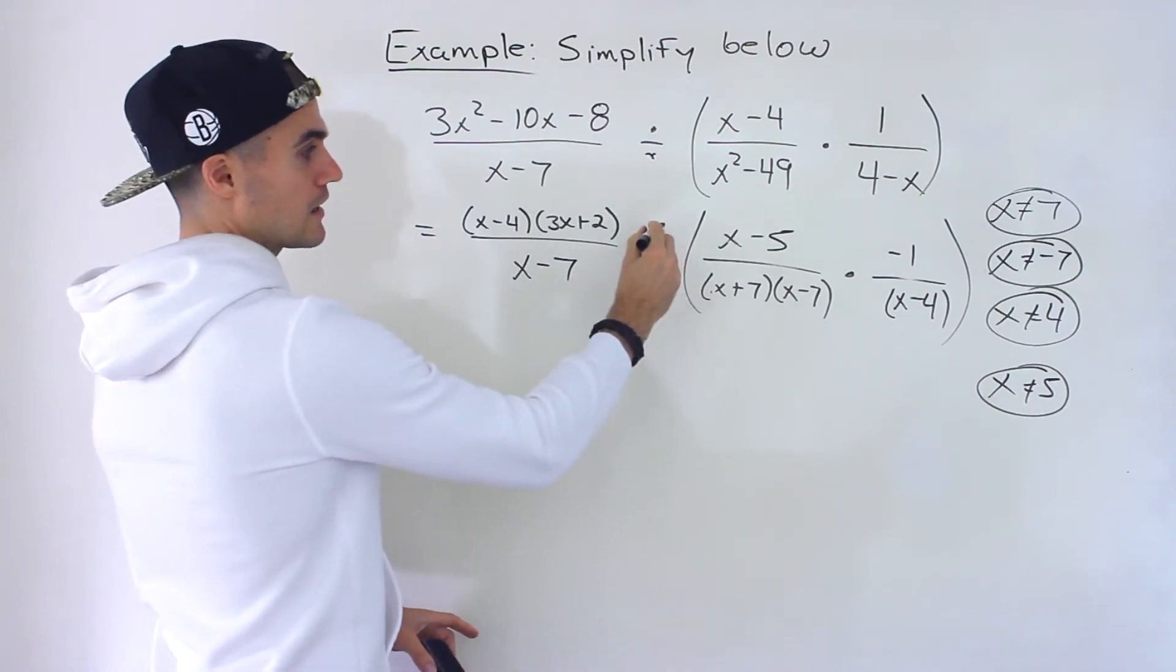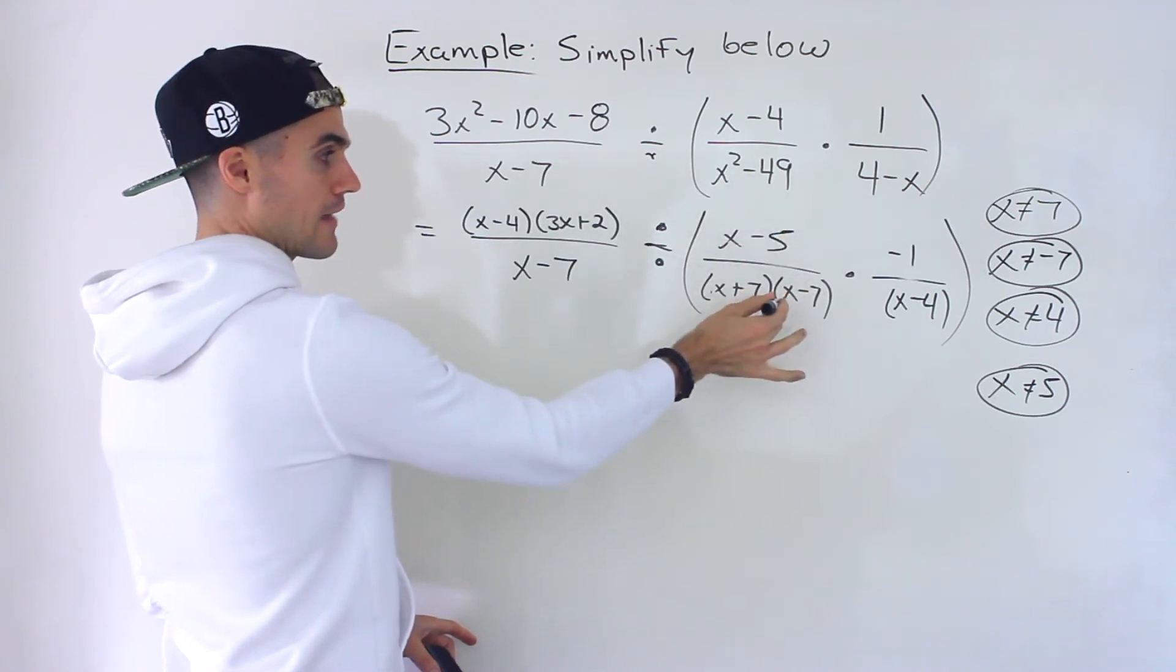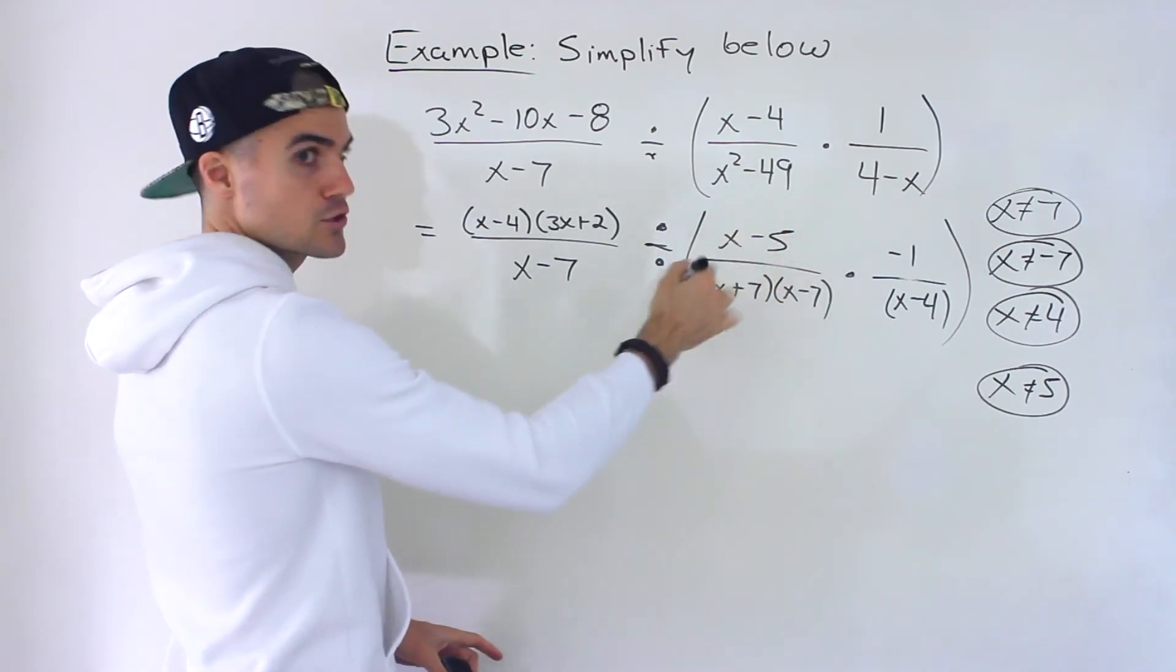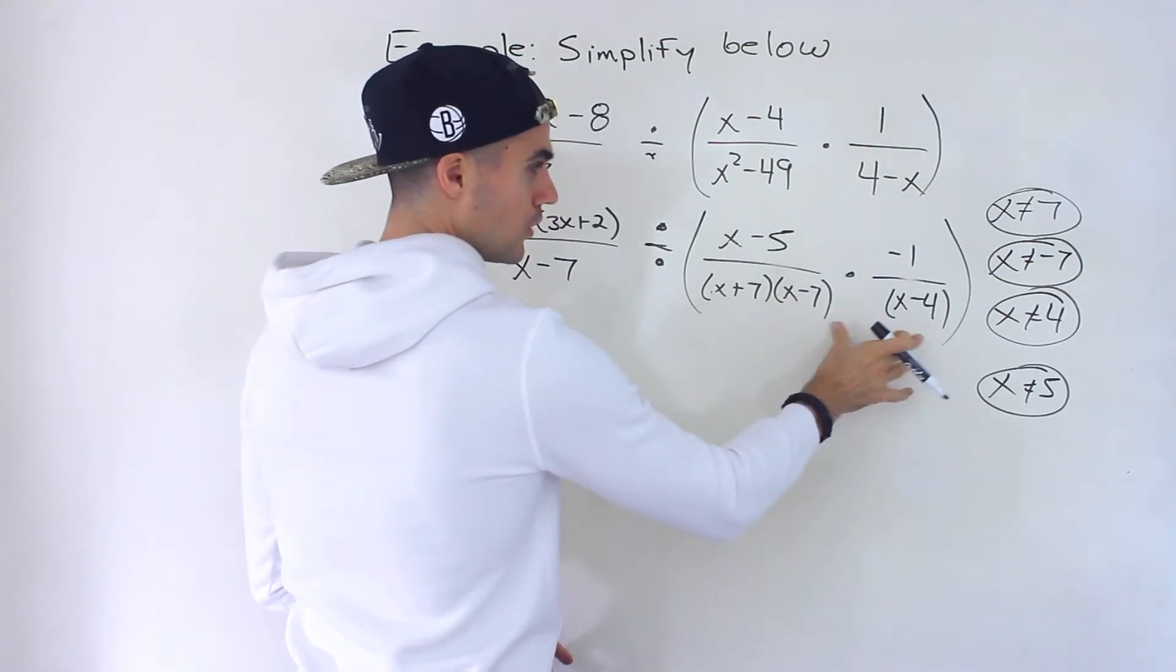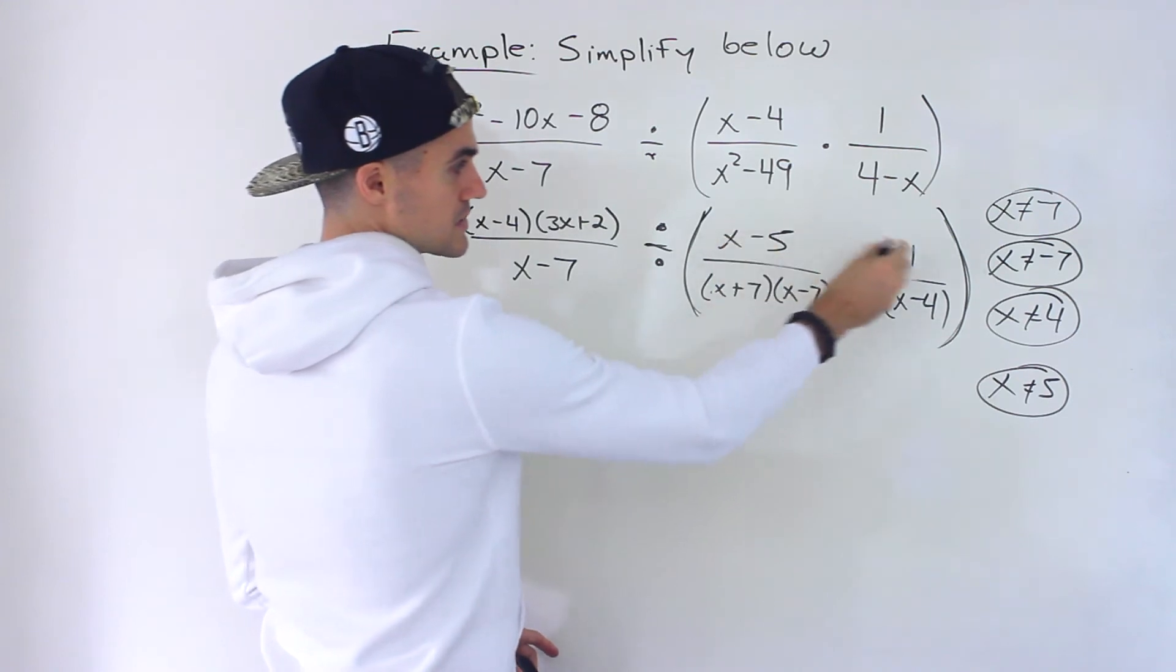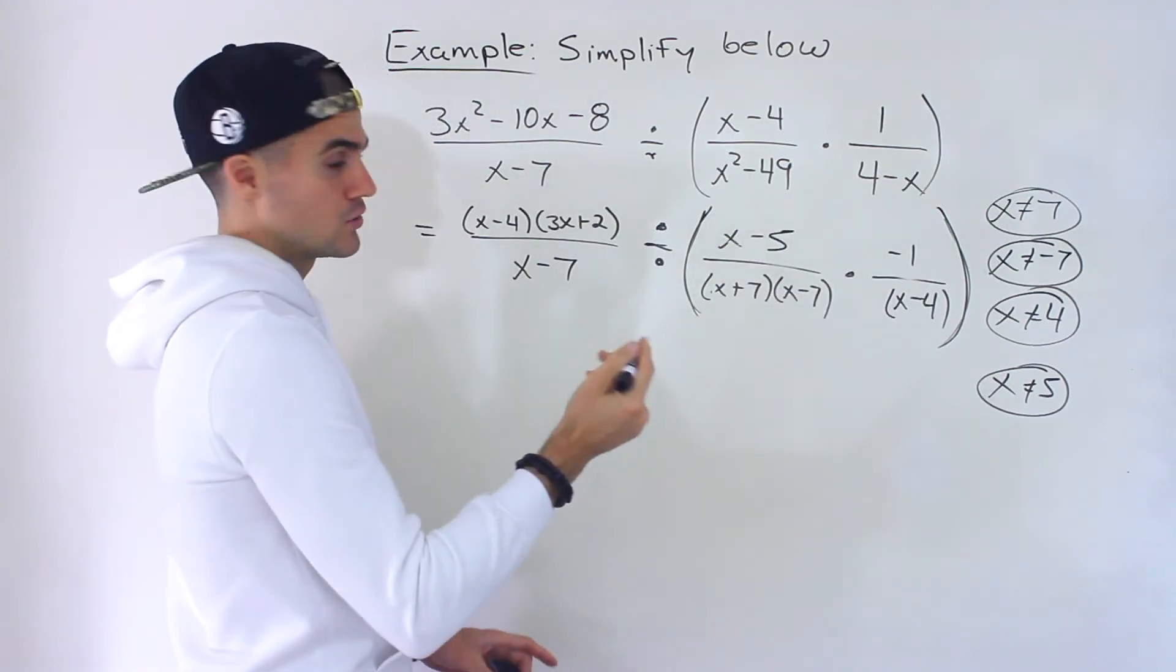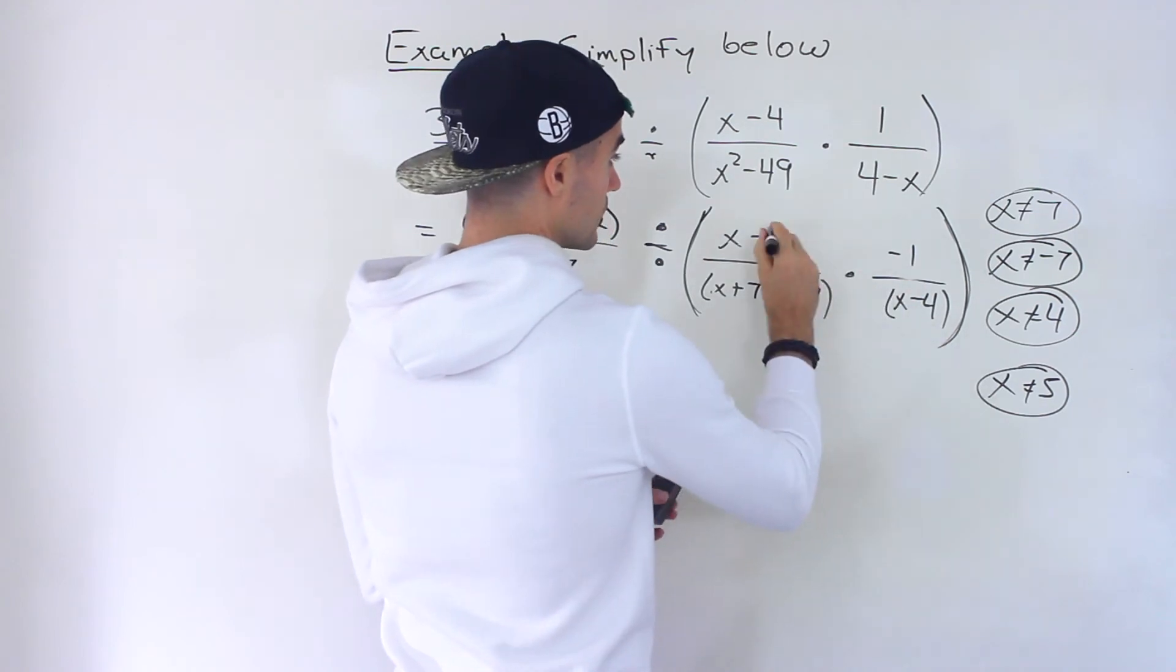Remember when you're dividing by a rational expression you get the restriction from the numerator and the denominator of the expression you're dividing by. Same thing over here even though it's split up into multiple expressions it's still in a big bracket. So you would still get the restrictions from the numerators. But in this case it was already taken care of over here.